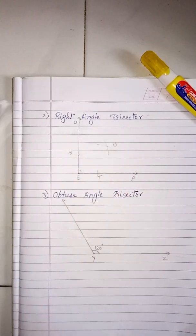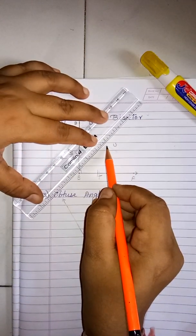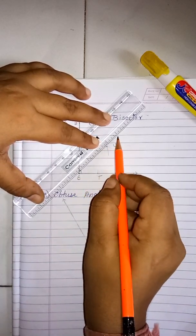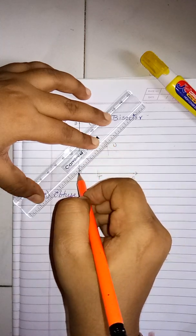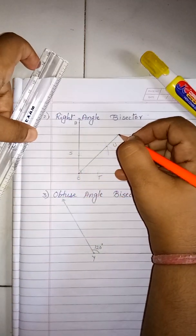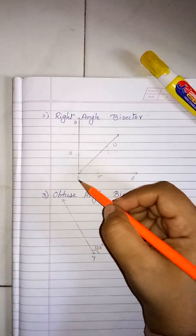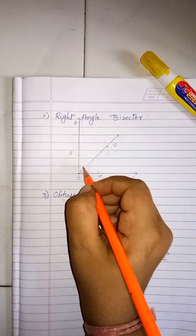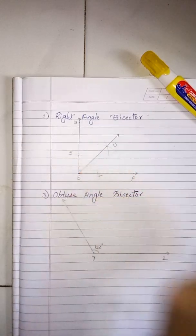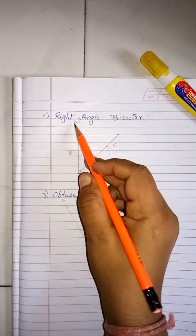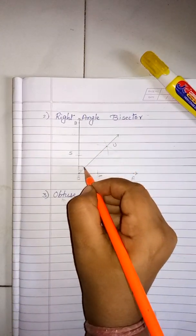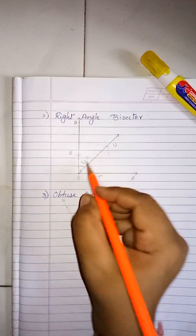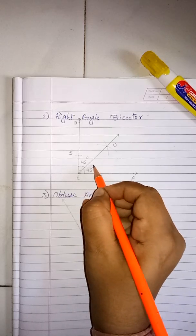Now take your scale and draw a ray from point E to point U. The angle bisector of angle DEF is now drawn. Since the angle is 90 degrees, angle DEU will be 45 degrees and angle UEF will be 45 degrees.